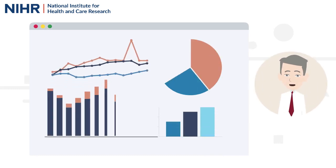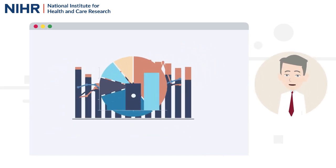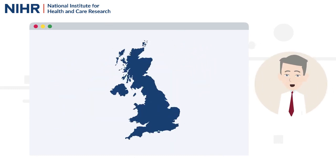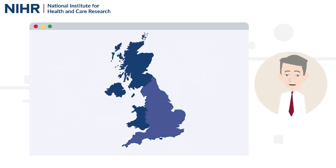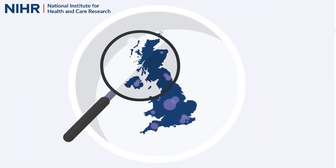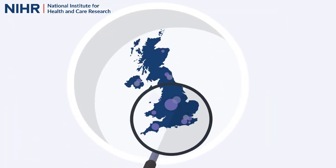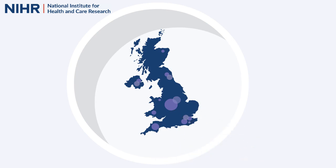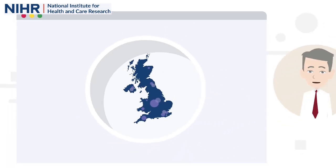ODP combines many data sets, including NIHR research activity in England and in collaboration with devolved nation systems across the UK. Disease indicators from external sources, such as the UK Health Security Agency, formerly known as Public Health England, and NHS Digital.